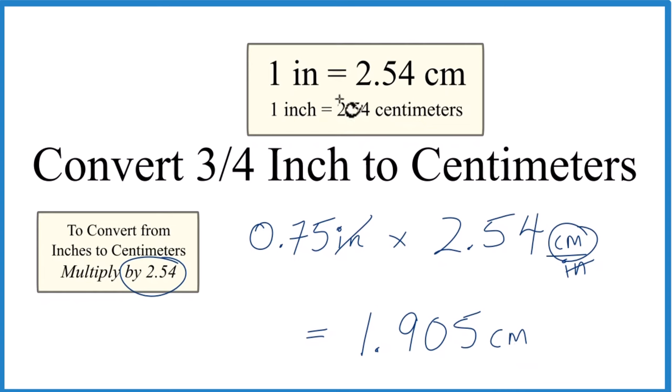We also know that when we go from inches to centimeters, the number gets bigger. So 0.75, we go to centimeters, we get 1.905. This is much larger. So we know also that helps us tell us that we did this correctly.